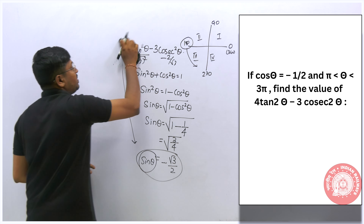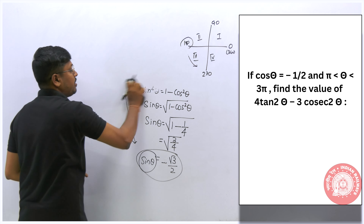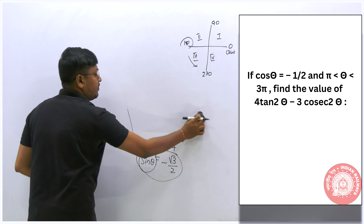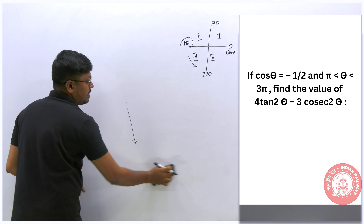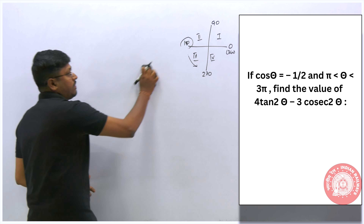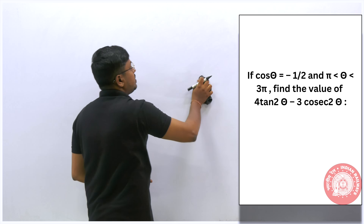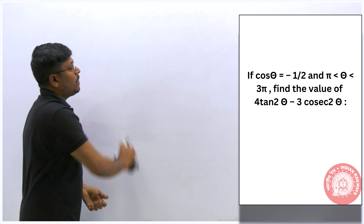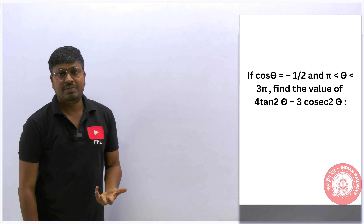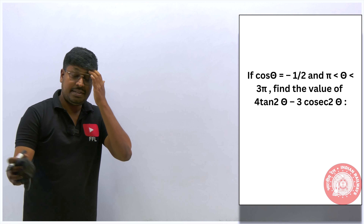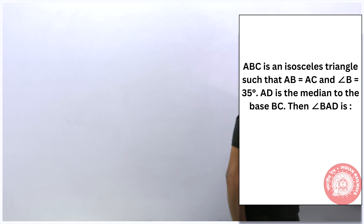Many students skipped this trigonometry question in the test report, but trigonometry is one of the easier topics once you understand the basic identities and quadrant concepts. Algebra and trigonometry are both manageable topics in the railway exam sessions.